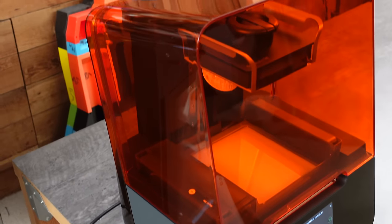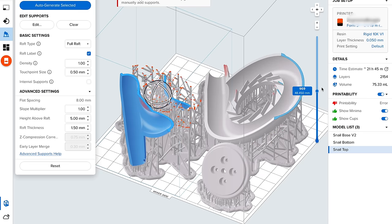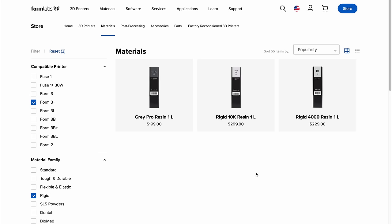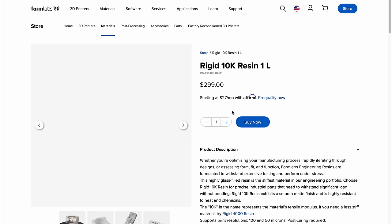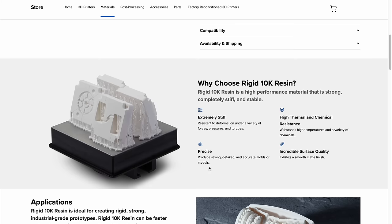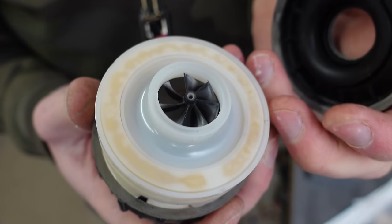So I'm SLA printing all the parts on the Formlabs Form 3+. These SLA printers can make parts with extremely fine detail, but what really sets the Formlabs stuff apart from your typical resin printer is the material selection. Their engineering resins are so much stronger than your typical photopolymer hobby-grade resin. For this project, I'm going to use their RIDGID 10K resin. It's supposed to be similar in strength to glass-filled thermoplastics, which is what the Dyson impeller is made from. More specifically, a carbon fiber reinforced polymer.